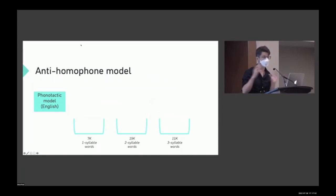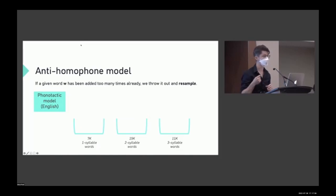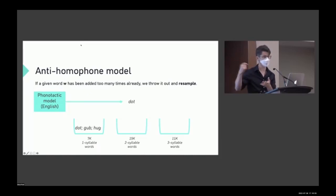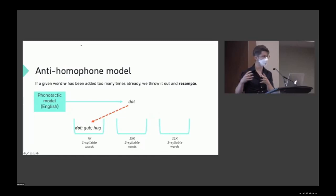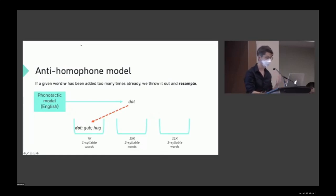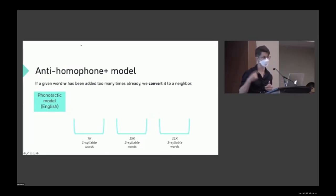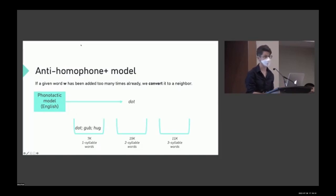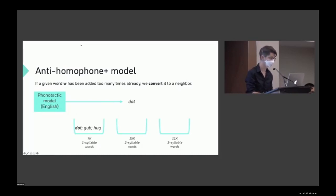That was the neutral model with no constraint on homophony. We also have an anti-homophone model where if a given word form has already been added too many times, we throw it out and resample. And we have an anti-homophone-plus model: rather than simply throwing out a word like 'dot,' we convert it to a neighbor — so if 'dot' is already too homophonous, we convert it to 'dog,' check whether 'dog' is too homophonous, and if not, add it to the lexicon. This can be interpreted as a subtle pro-neighbor pressure in addition to the anti-homophone pressure.